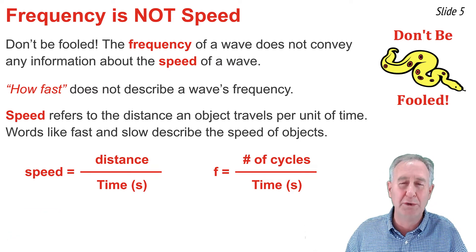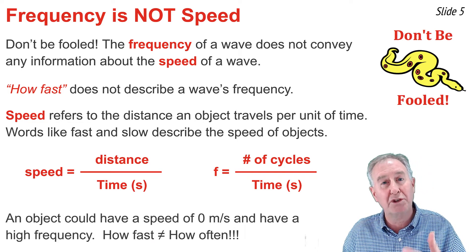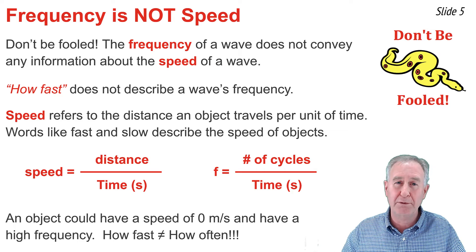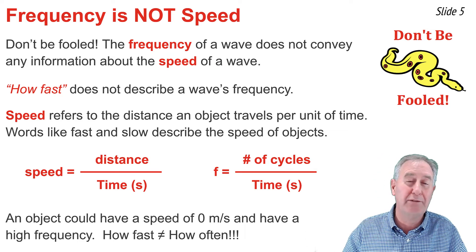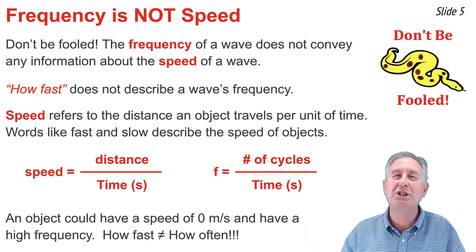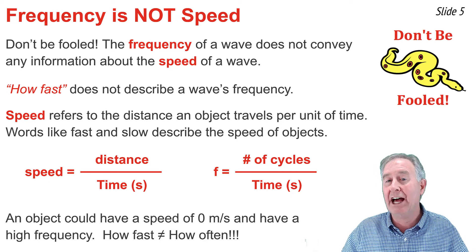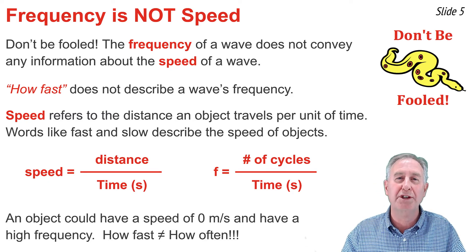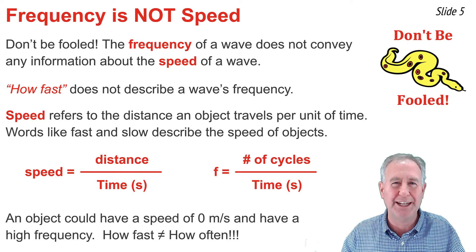Let's suppose that you had a tuning fork, and you held the tuning fork in your hand, and you got the tines of the tuning fork vibrating back and forth. Those tines might vibrate back and forth with a frequency of 300 hertz, but the tuning fork isn't going anywhere. Its speed is 0 meters per second. How often and how fast are two different descriptions, and frequency is not equal to the speed of an object.